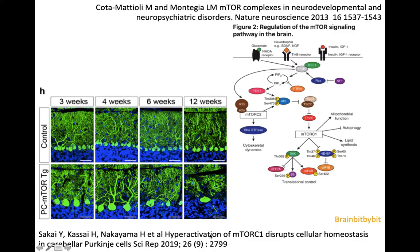I couldn't find an image of the consequences of mTOR problems in the supratentorial brain, so this is a study from cerebellar Purkinje cells, which are GABAergic. Purkinje cells also arise from the ventricular zone like the glutamate neurons in the supratentorial brain. If there is hyperactivation of mTOR, the neurons shown in green have larger cell bodies and more dendrites, and unfortunately, comparing these images at 12 weeks, they go into apoptosis faster.